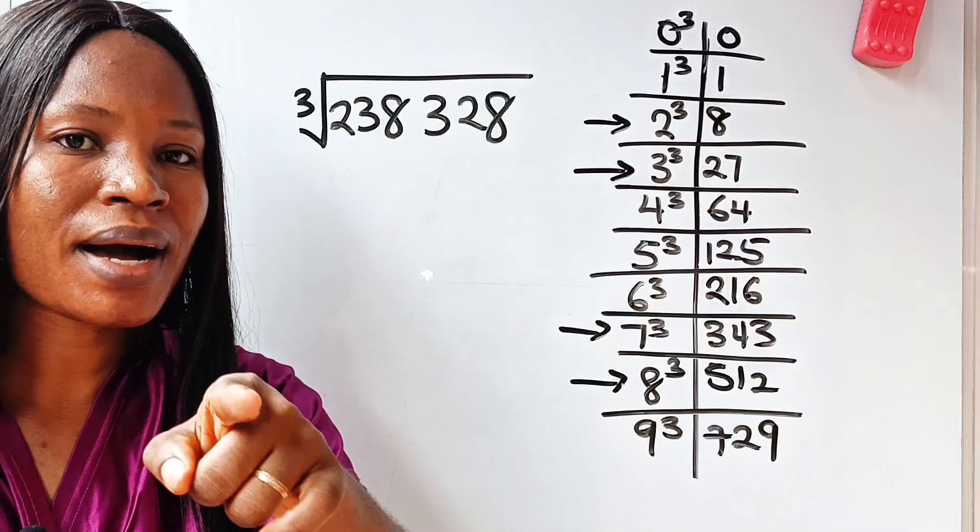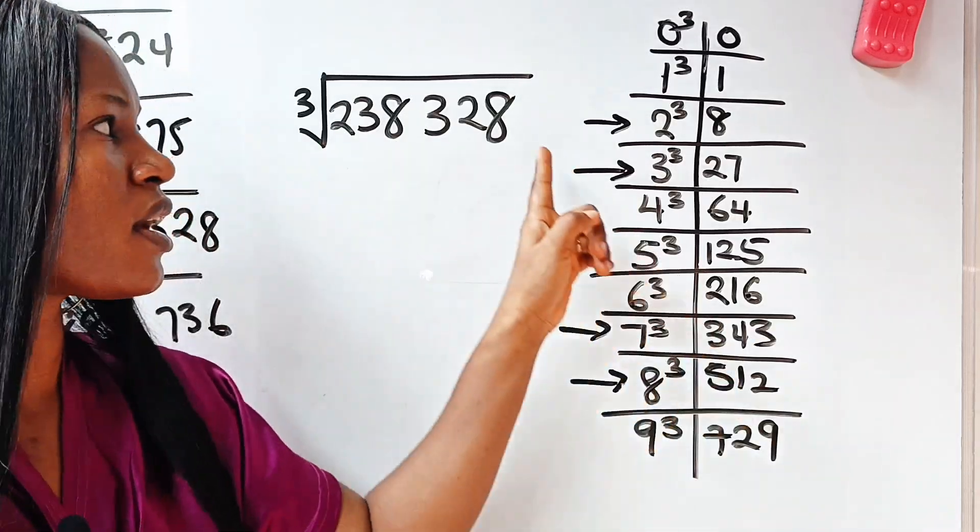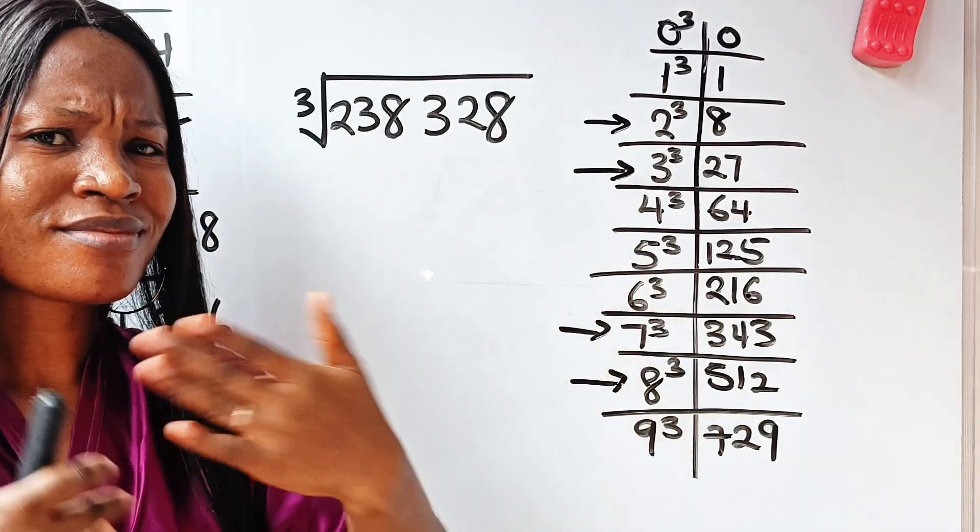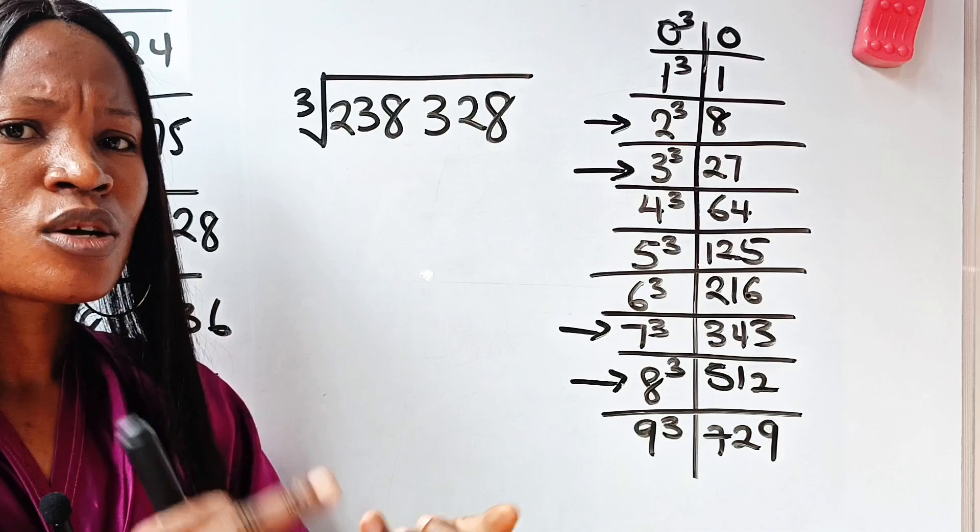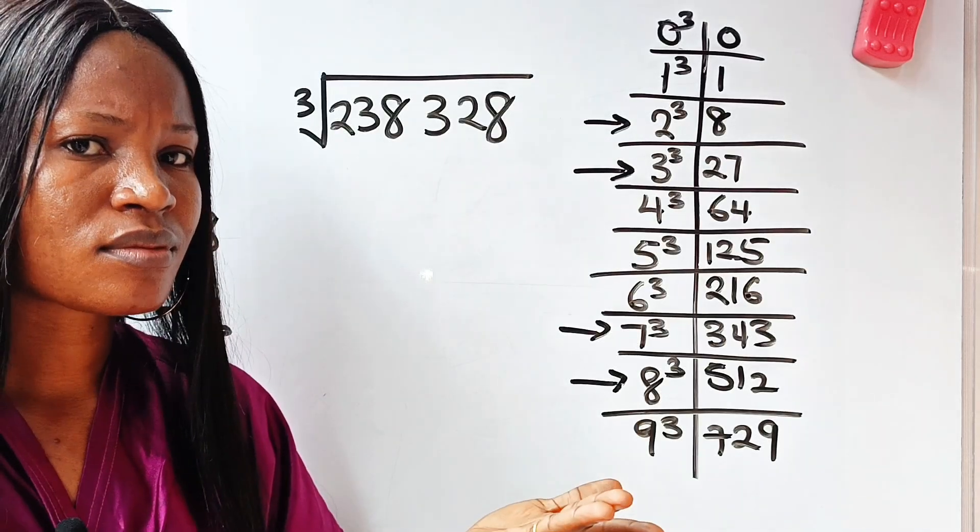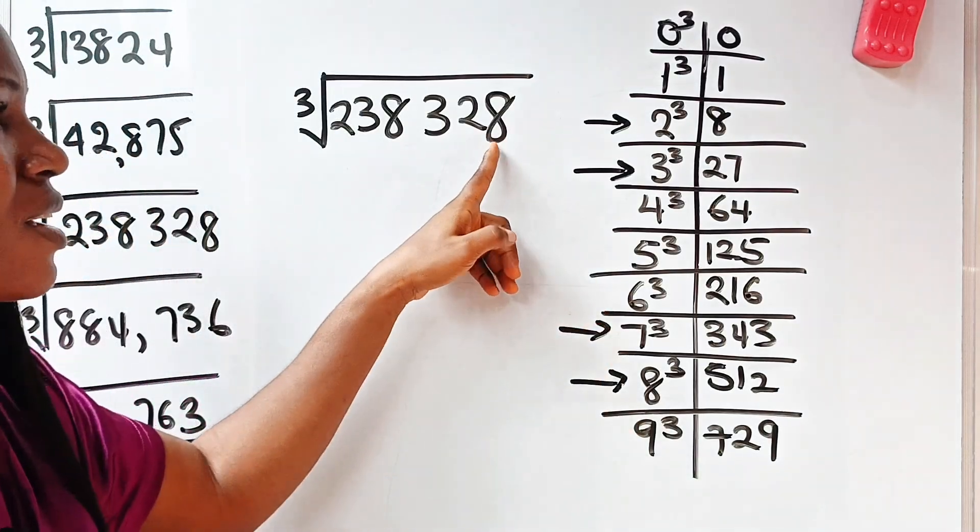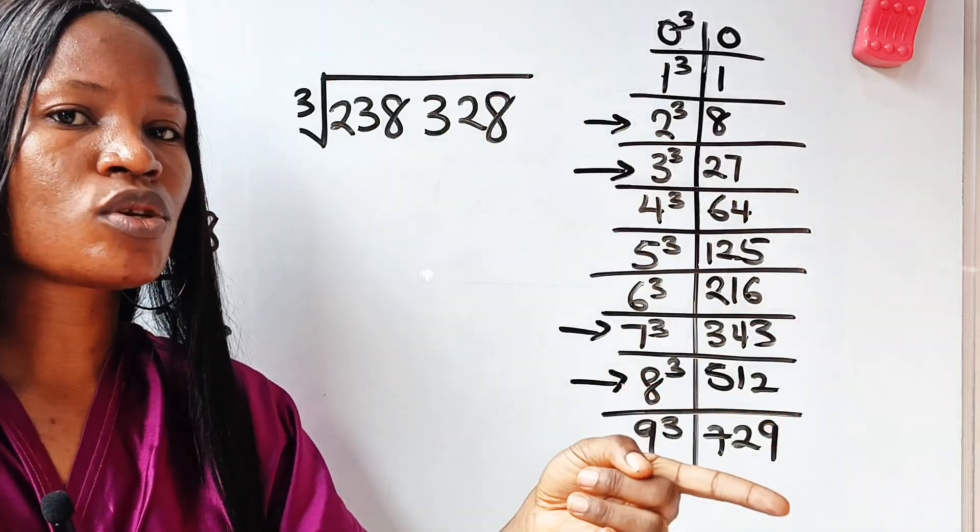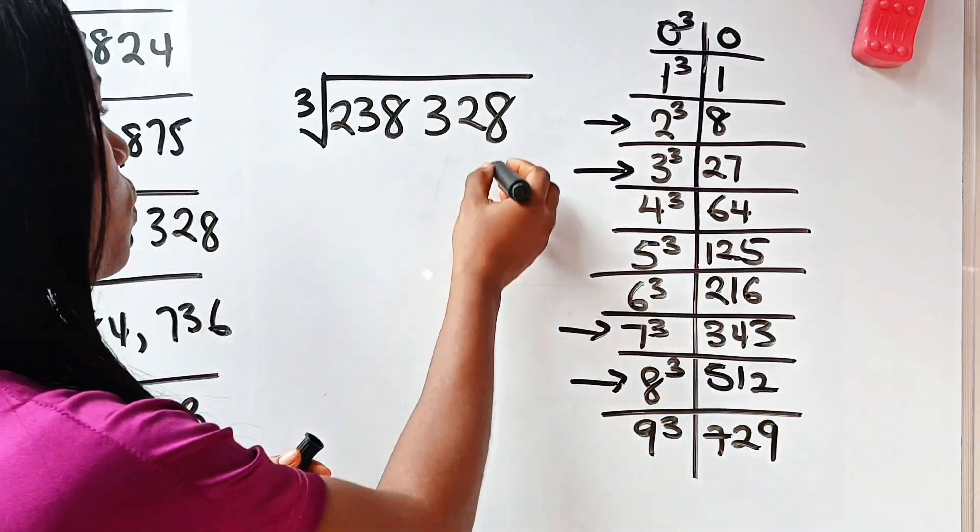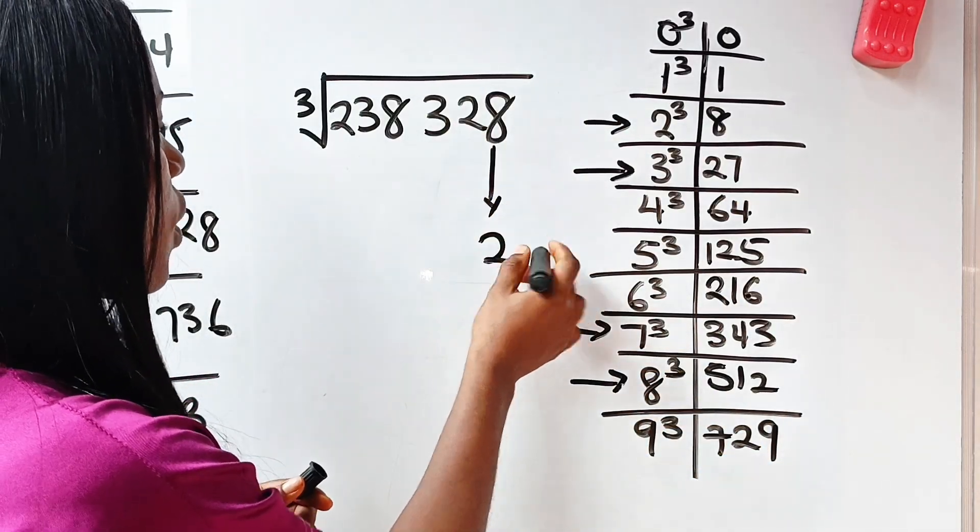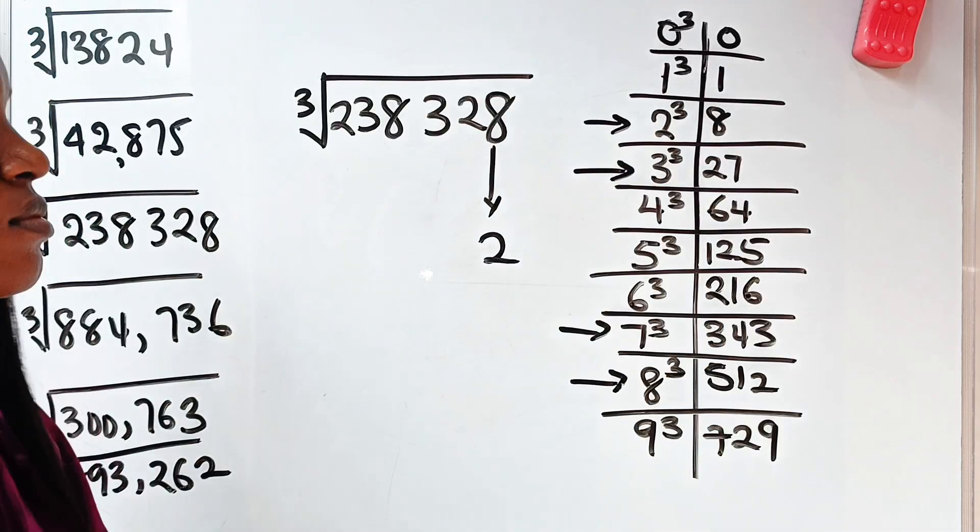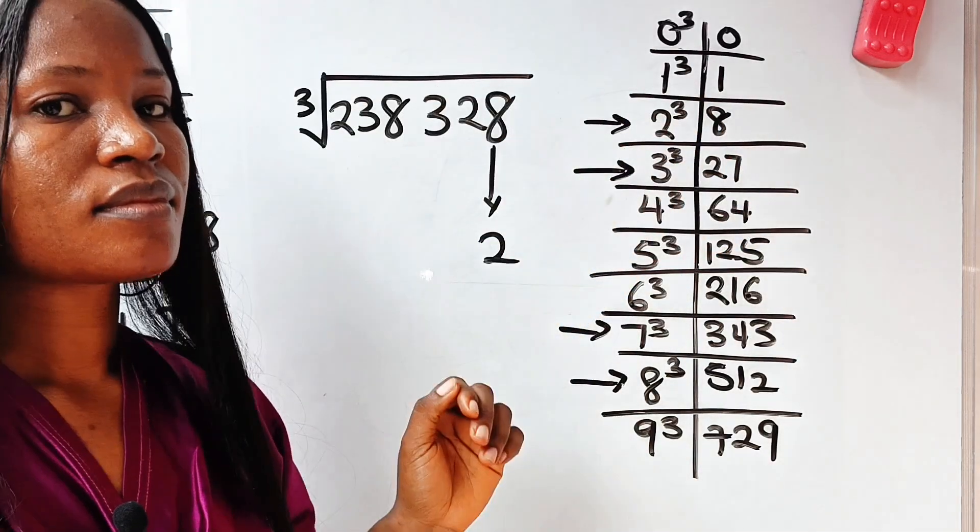Seeing 8 already, remember, 8 plus 2 is 10. So definitely my answer will end with 2. Do you remember what I told you about 2, 3, 8, and 7? You remember, right? So immediately you see 8, you should think about 2 immediately. Now, it's only 2 that will give you a number when you cube it that will end with 8. Look at it. Alright?